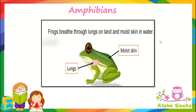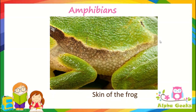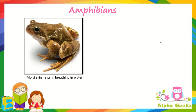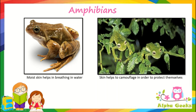Amphibians breathe through their lungs when on land and through their skin while in water. The skin of the frog serves two purposes. First is respiration — the thin, moist skin allows gases to pass through, helping the frog to breathe. Second is protection — frogs change color to help hide from predators by matching the color of their surroundings.